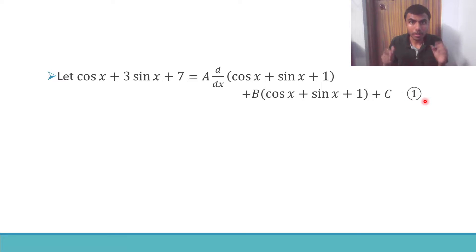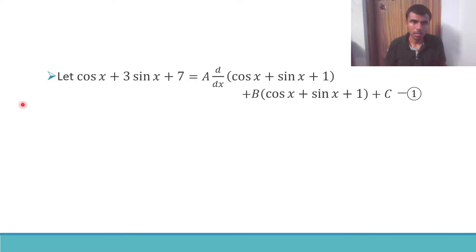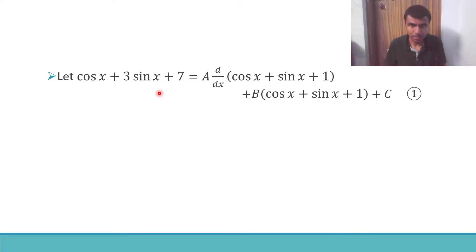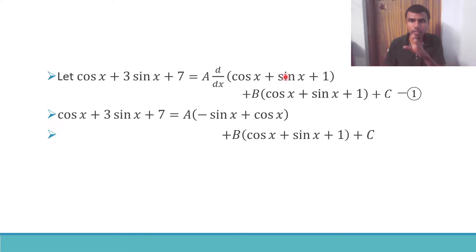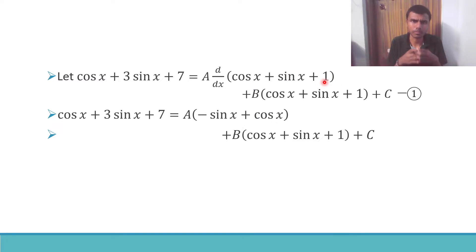Our duty is to find out a, b, c. The derivative of cos x is minus sin x, the derivative of sin x is cos x, and the derivative of 1, which is a constant, is 0. So I get a into (minus sin x + cos x).